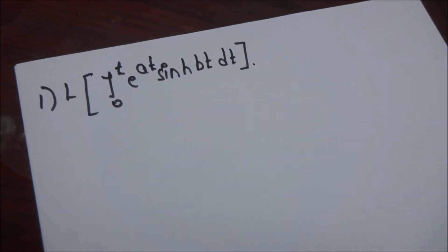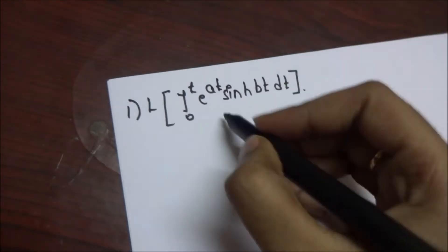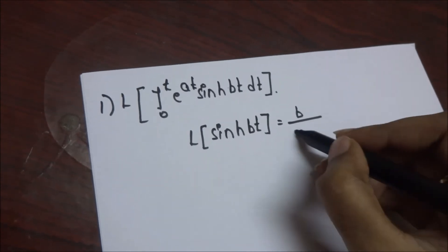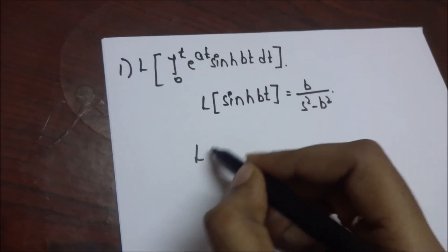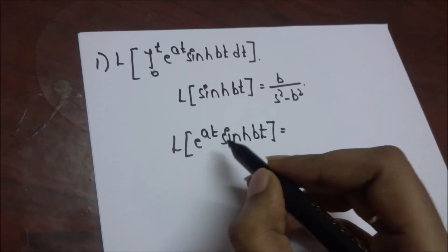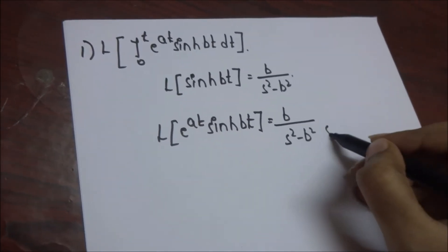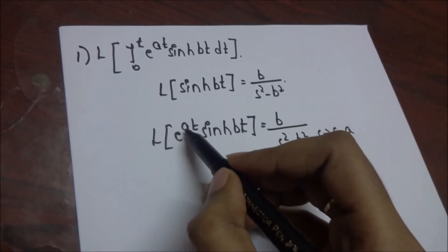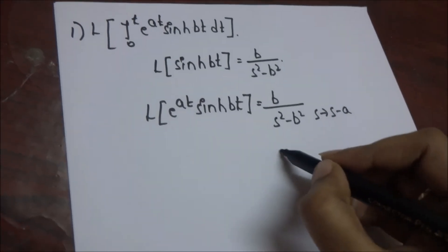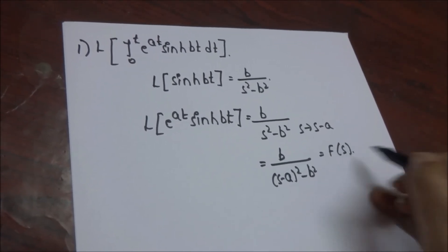The first problem is on evaluation of integrals by Laplace transform. The given problem is in the form of Laplace of integral 0 to t of f(t) dt. The formula of Laplace of sinh(bt) is b/(s² - b²). Now, Laplace of e^(at)·sinh(bt) uses the first shifting theorem, where s is replaced with s minus a, giving b/((s-a)² - b²). This is represented as F(s).